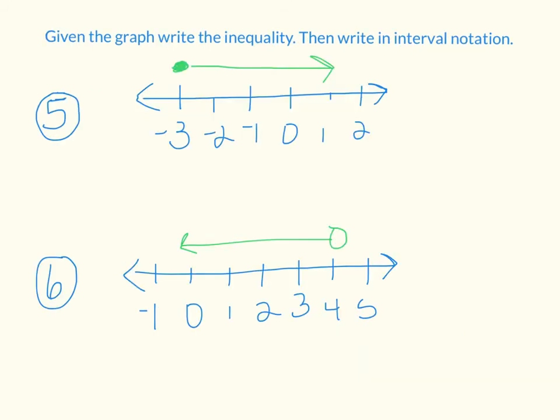Given the graph, write the inequality, then write in interval notation. As we're looking at this, we see a dot above the negative 3, and it's going to the right. The shading part is going right, so we know we have to use the greater than or equal to symbol. When we're writing these, you're going to want the variable on the left side. So any number x that's in our solution set is going to be greater than or equal to negative 3.